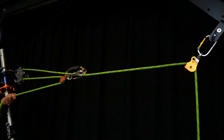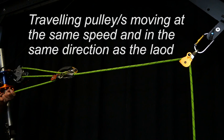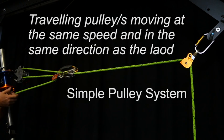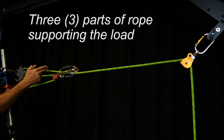So if we have a look at our pulley system and try and work out what it is, let's look firstly is it simple. Well as I haul up on here, the travelling pulley is moving at the same speed and in the same direction as the load. So it's simple.